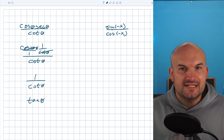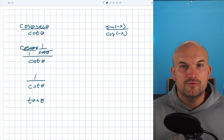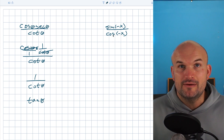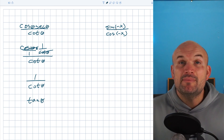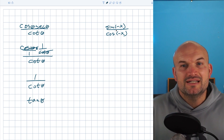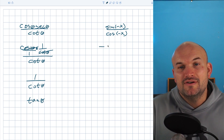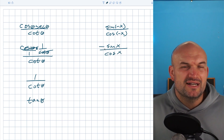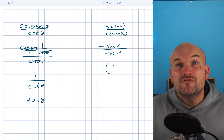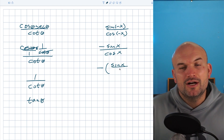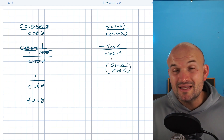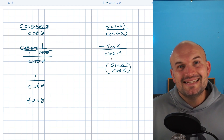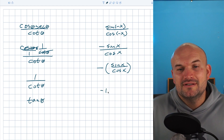In this next example, we have the sine of negative x divided by the cosine of negative x. The even-odd identities really jump out here. Whenever you have a negative angle inside the argument of your trigonometric functions, think even-odd identities. The sine of negative x is equivalent to negative sine of x, and the cosine of negative x is equivalent to positive cosine of x. We can put that negative out in front, then sine of x over cosine of x is the tangent of x by the quotient identity. So the final answer is negative tangent of x.